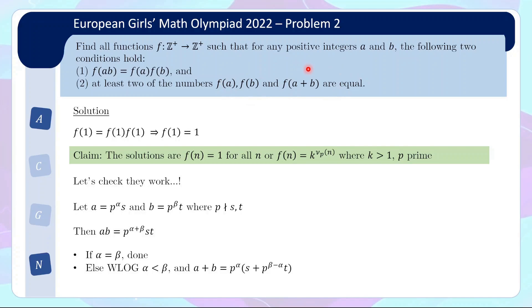And how about condition 2? I mean, if alpha equals beta, then f(a) and f(b) will already both be equal to k to the alpha. So condition 2 will be met. Otherwise, well, without loss of generality say alpha is less than beta. Then a plus b will basically be, you can pull out the common p to the alpha, and then you get s plus p to the power of beta minus alpha times t. This thing in the bracket is not divisible by p. So a plus b, if you take the value f, it will be k to the alpha. So in this case, it will be equal to f(a). So again, condition 2 is met.